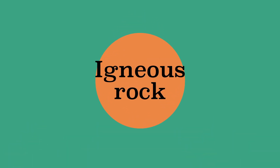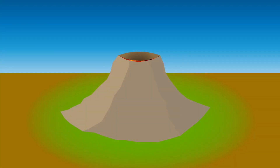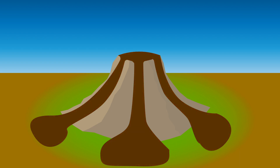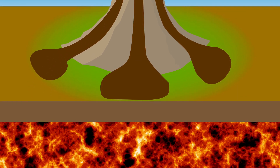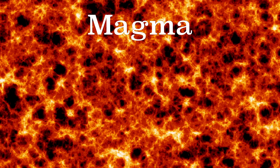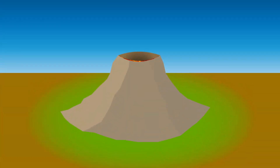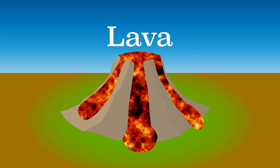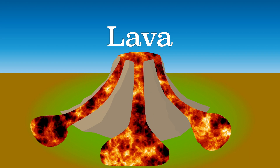Let's start with igneous rock. When something solidifies, the fluid becomes a solid. Igneous rock is a rock that is formed from liquid material. Rock only liquefies when it is very hot, and such temperatures are only reached in the interior of the earth. We call liquid rock in the interior of the earth magma. When magma comes to the surface we call it lava. Lava comes in contact with cold water or cold air and will quickly solidify.